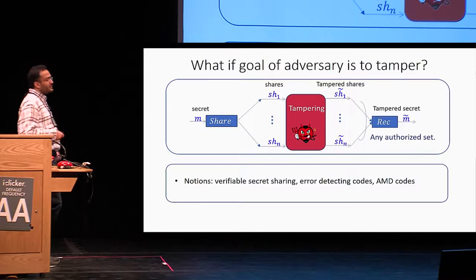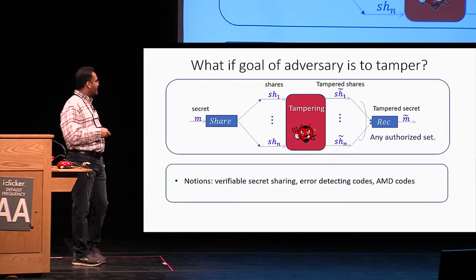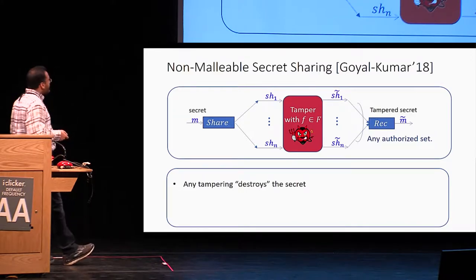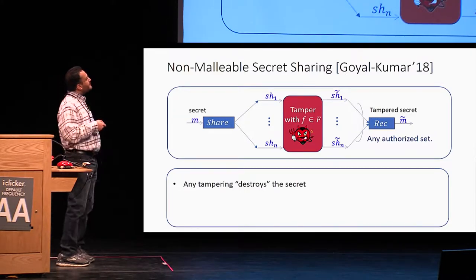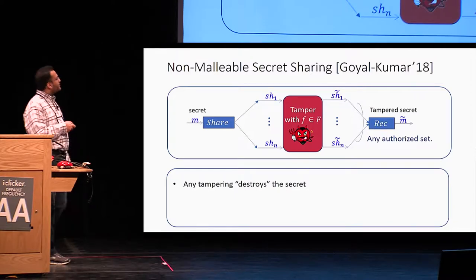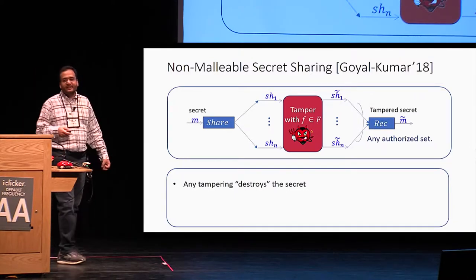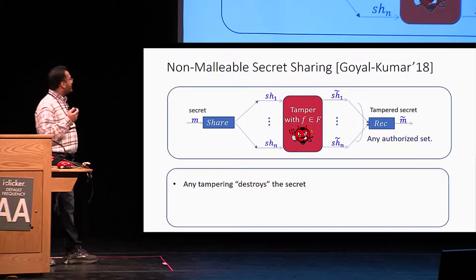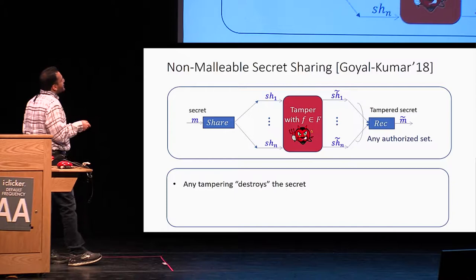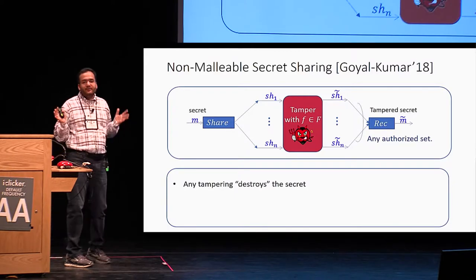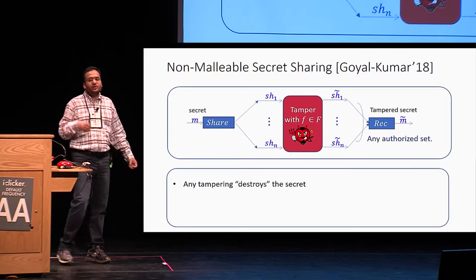One such primitive was proposed very recently in a work of Goyal and Kumar, called non-malleable secret sharing. Here, the guarantee we want is that any kind of non-trivial tampering by the adversary essentially destroys the secret.